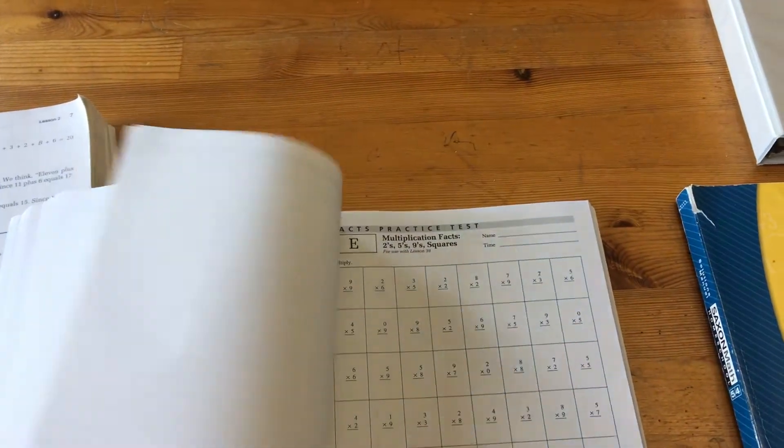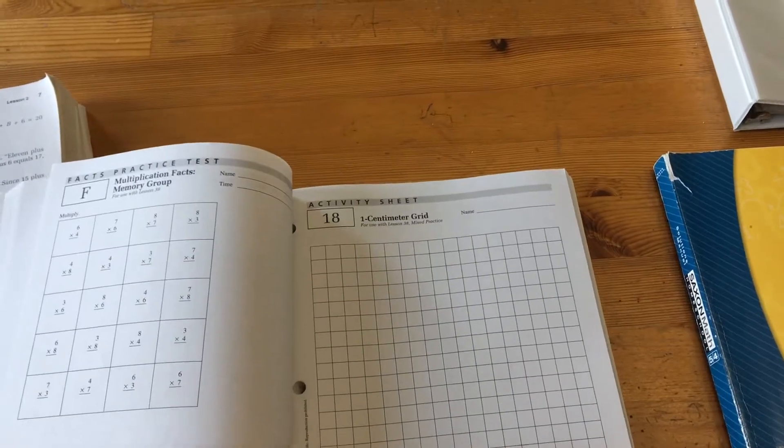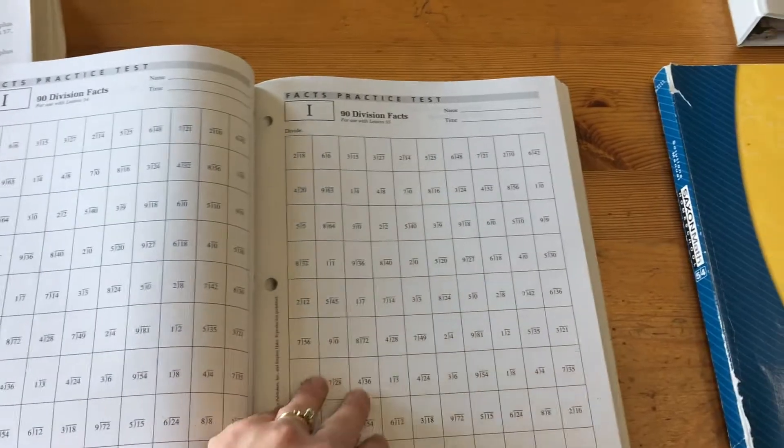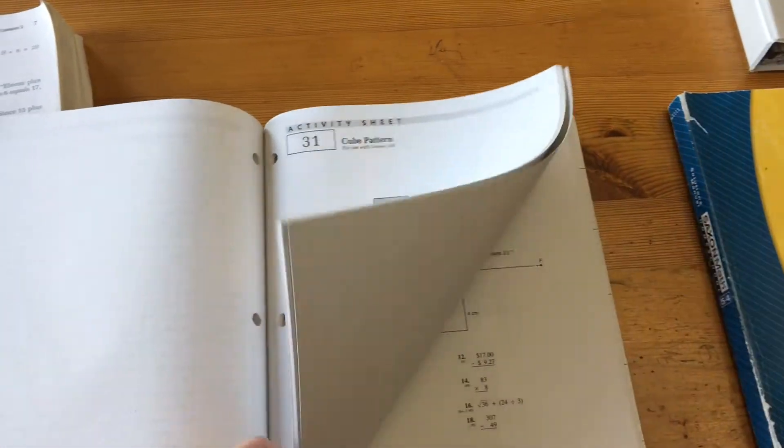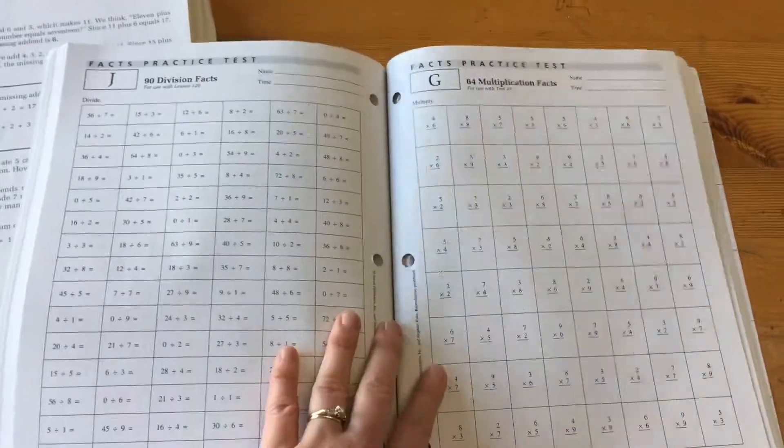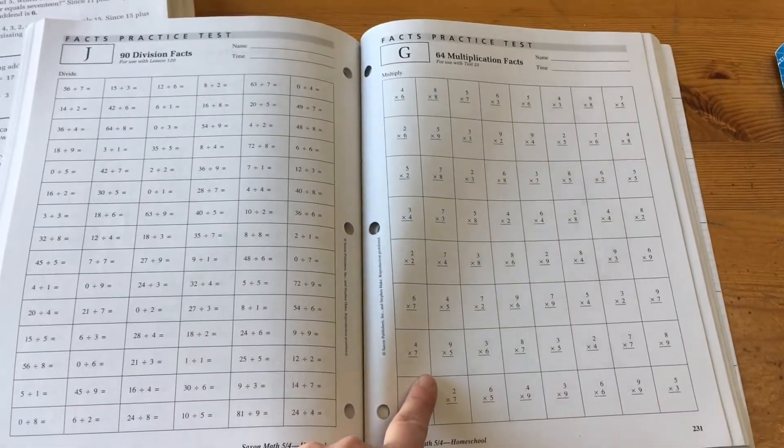They also have the masters in here which are these kind of sheets that you need for some lessons. But there's a wide variety. Addition, subtraction, fractions. There's percentages near the end as well. So they're going to be doing that with the lesson. And those come in here in tear-out sheets. They also do one of these with each test as well.